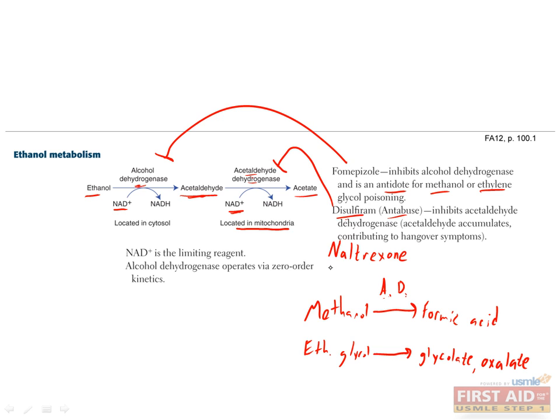A third alcohol abuse drug, which we'll discuss more in the psychiatry chapter, is naltrexone, which is an opioid receptor antagonist. Therefore, this is a centrally acting drug that's used for alcoholism.